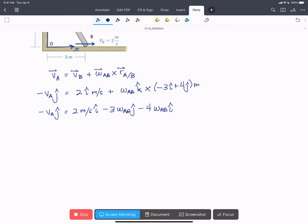We have a vector equation. We have two unknowns: VA and omega AB. But because a vector equation turns into two scalar equations, we're going to have two equations to solve for two unknowns. So we'll split it into components.